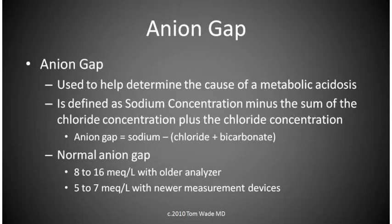The anion gap is a calculation used to determine the cause of a metabolic acidosis. It's defined as the sodium concentration minus the sum of the chloride and bicarbonate concentrations. The newer measurement devices generate a normal value of perhaps 5 to 7 milliequivalents per liter.